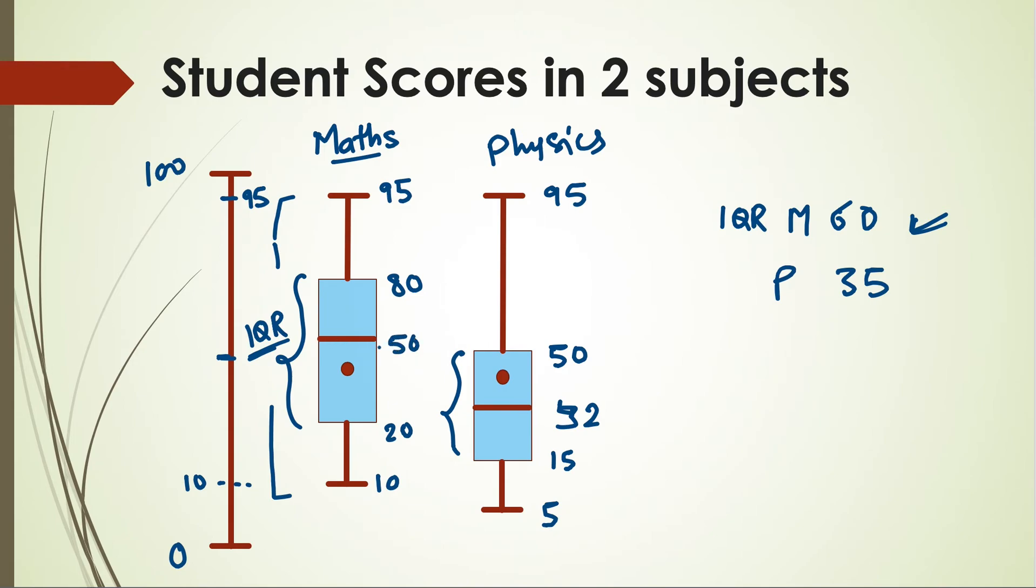So the median score of Maths is 50, for Physics it's 32. But somebody got higher marks also that shifts the mean above median. But in this case, mean is below median. So in this way, you can use this box plot diagram of different data sets to compare the various indicators in that.